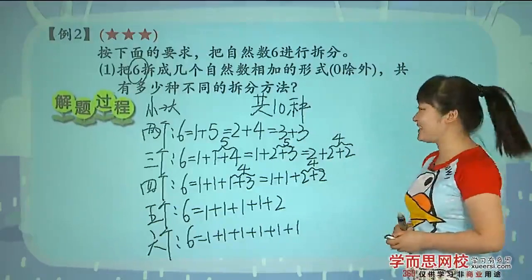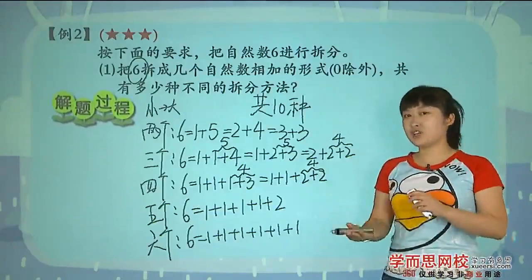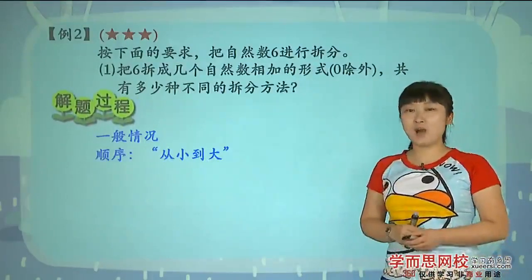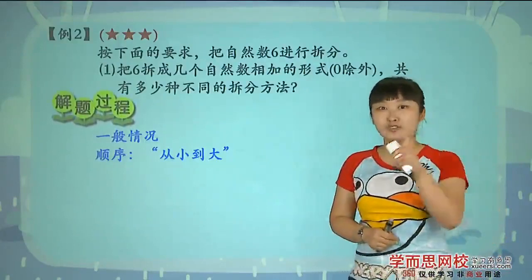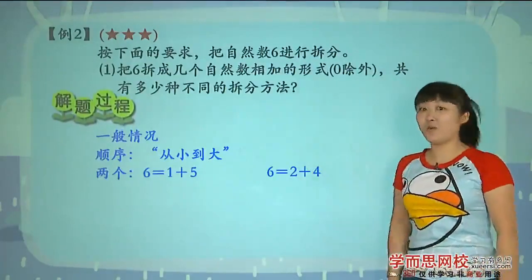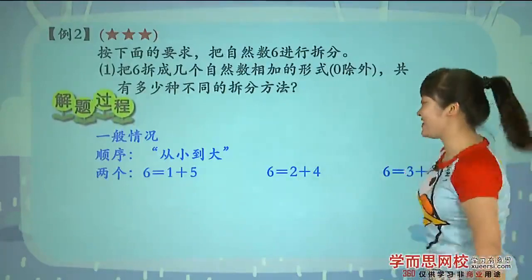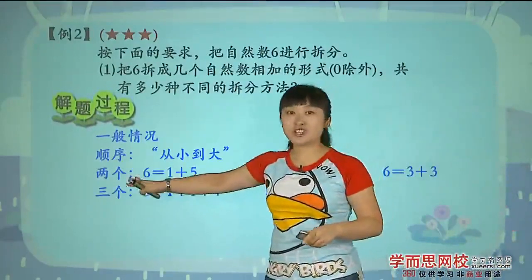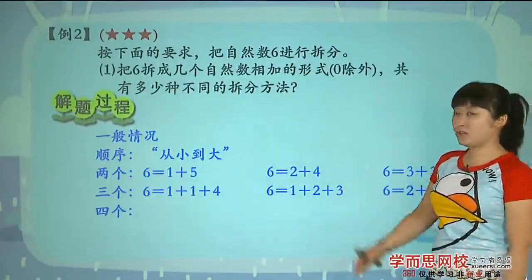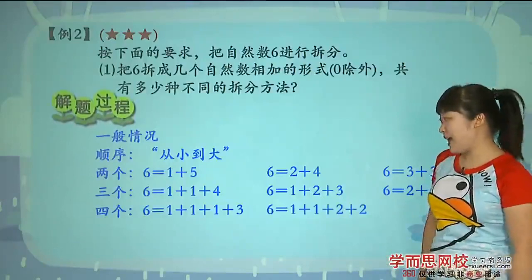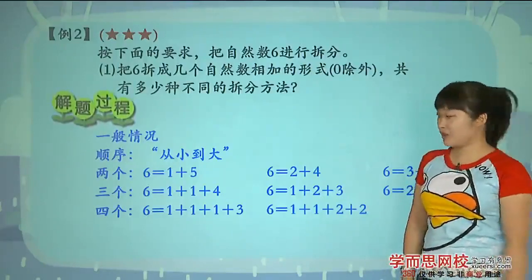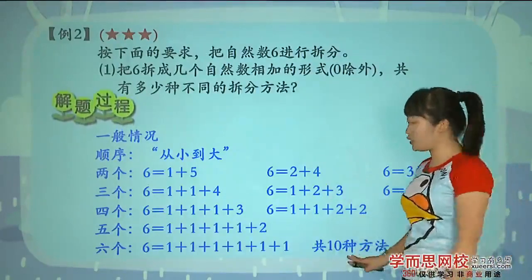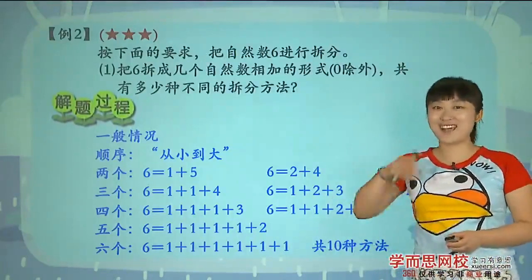那接下来跟着乐乐老师共同来看一下咱们电脑版的解答过程,这个字要比我写的漂亮得多。请看这里看得更清楚。一般的情况下我们的顺序那就是由小到大,把六拆成两个数一加五、二加四,在这儿还有一个三加三呢。再往下这是三个的,拆的时候头脑特清楚把它转化成两个的形式。再往下四个的,五个的,下面六个的。综上所述一共会有十种方法。